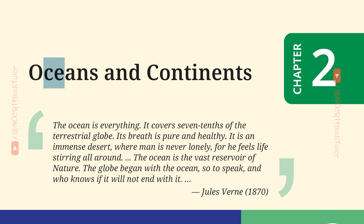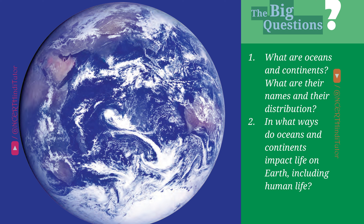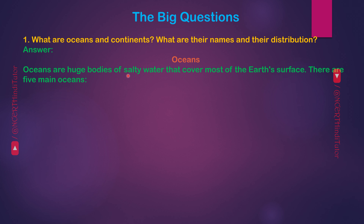Chapter 2: Oceans and Continents — Question Answers. The Big Questions. Question 1: What are oceans and continents? What are their names and their distribution? Answer: Oceans are huge bodies of salty water that cover most of the Earth's surface. There are 5 main oceans.